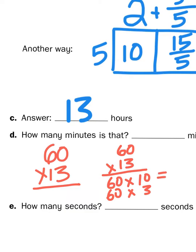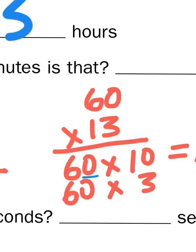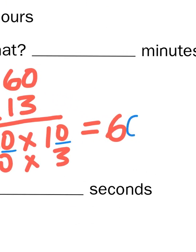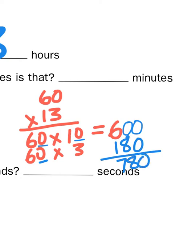Six times one is six, so sixty times ten — six with one zero times one with one zero — gives me six hundred. And sixty times three is like six times three with a zero behind it. Six times three is eighteen, so sixty times three is one hundred eighty. That gives me a total of seven hundred and eighty minutes.